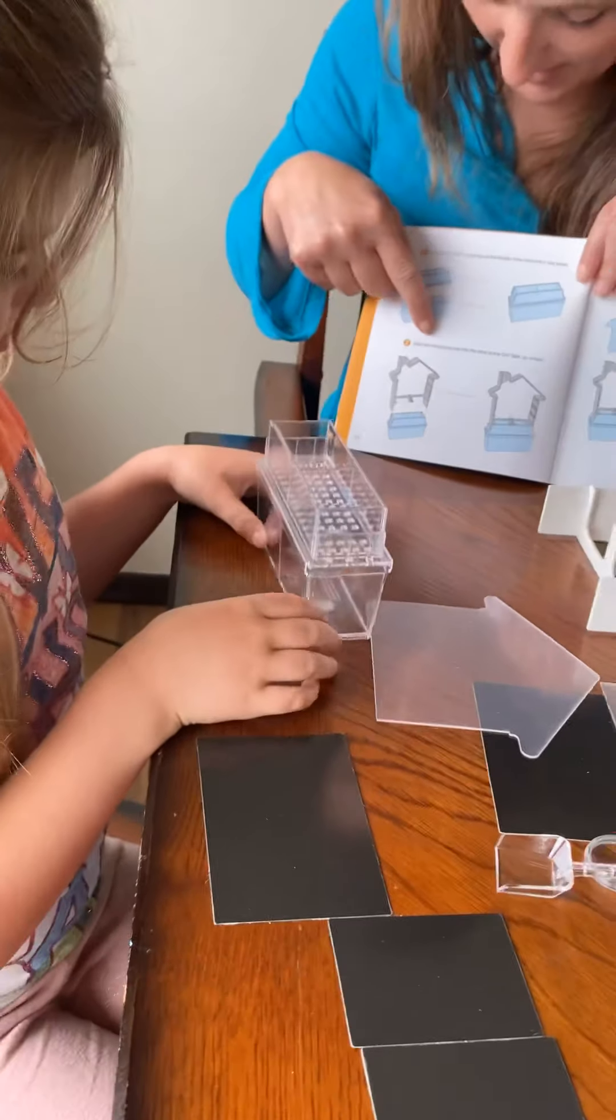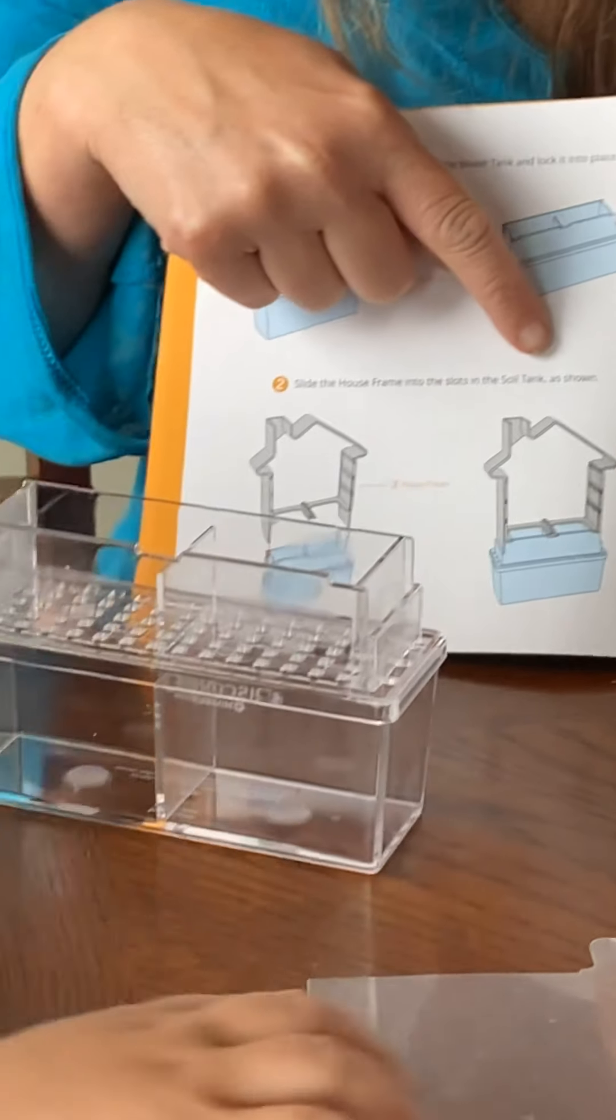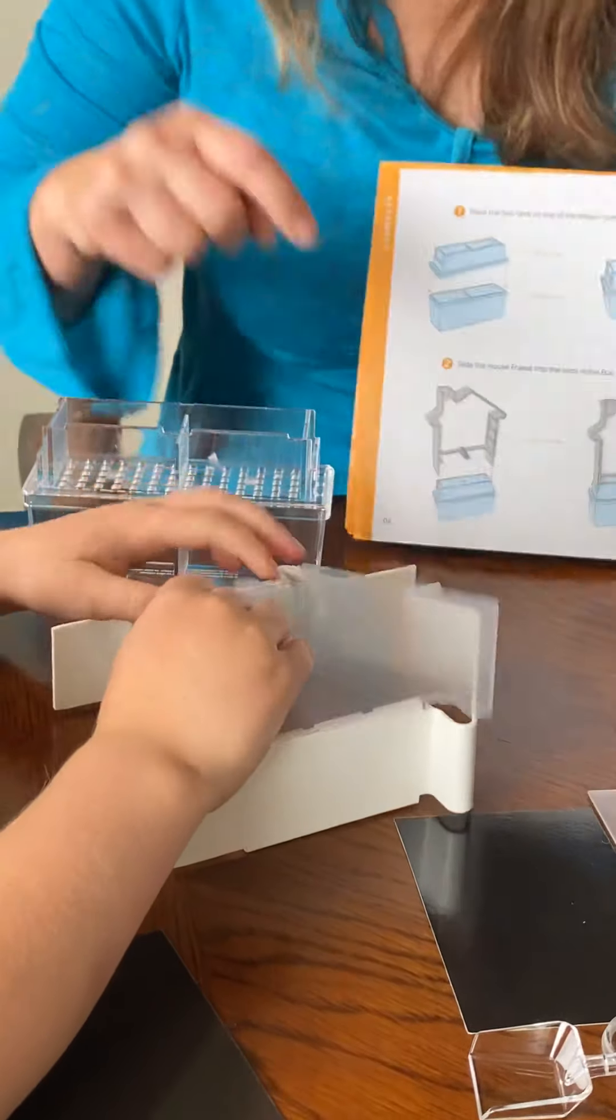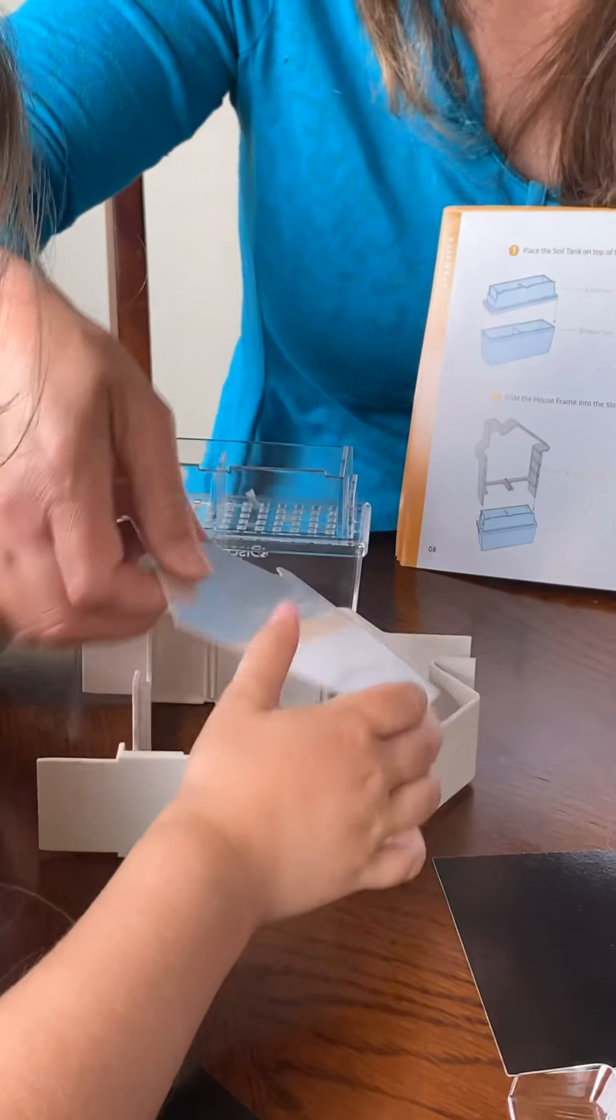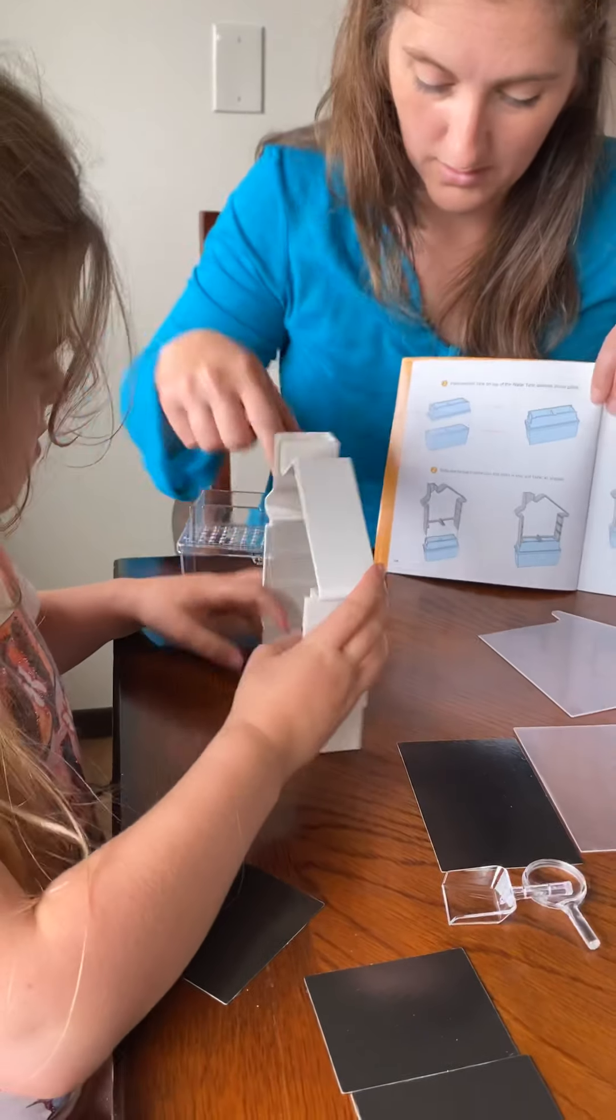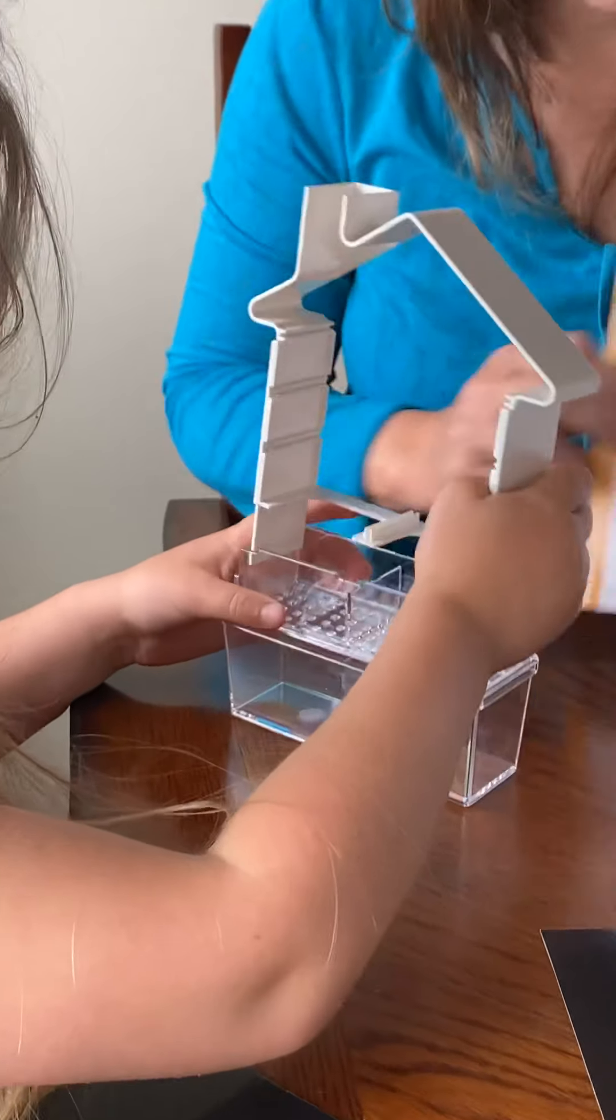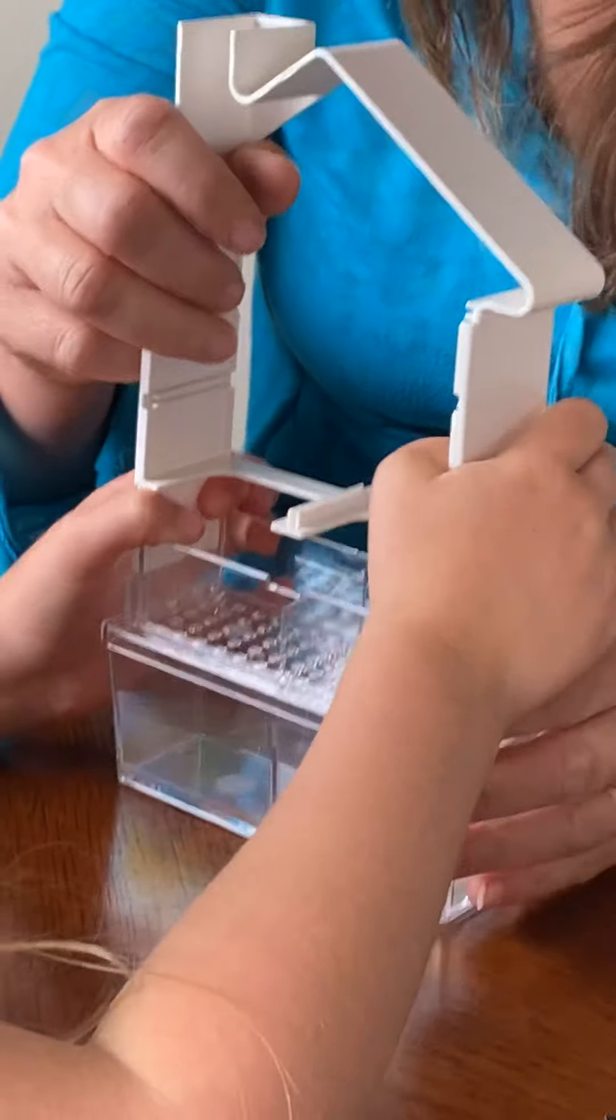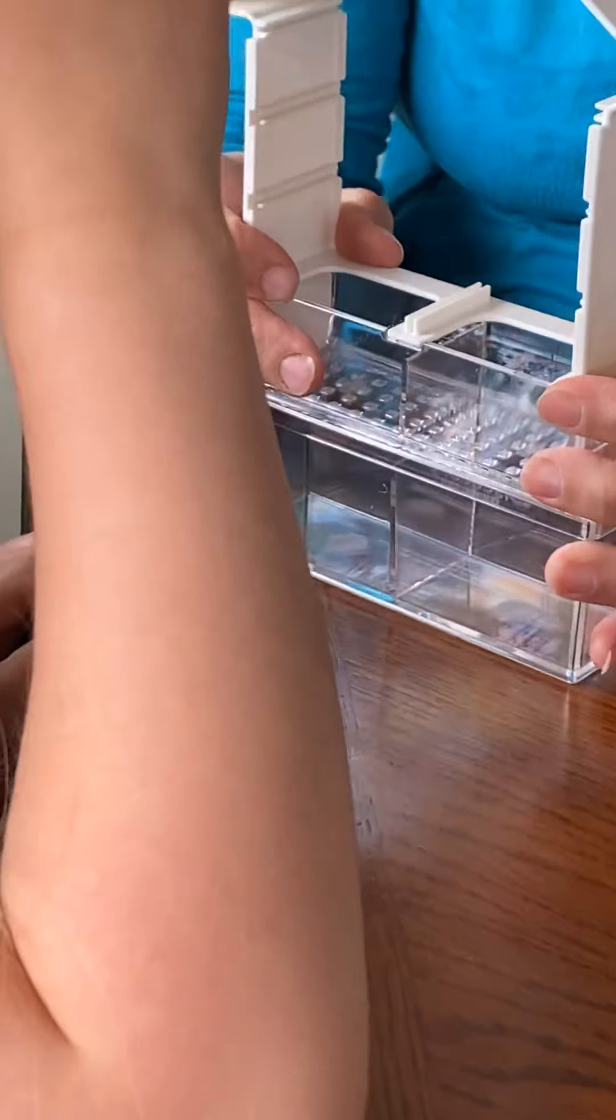Now it says slide the house frame onto the slots in the soil tank as shown. Oh see? Not those pieces yet - the main house piece slides onto here. Oh, good job. There we go, that's perfect.